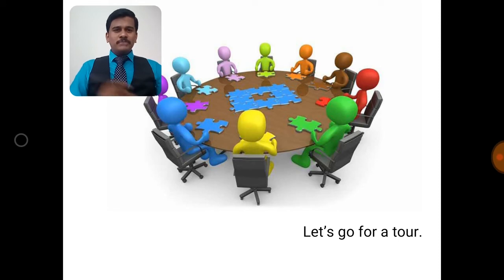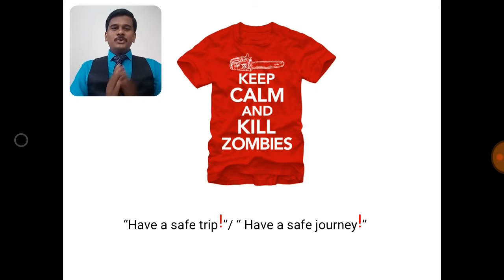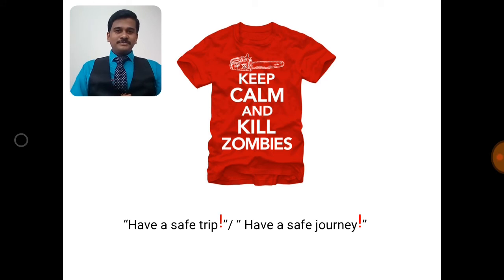In between the meeting, someone says: 'Let's go for a tour.' T-O-U-R is not 'tour' — it's 'tour.' We fixed this red t-shirt as our color code. So let's go for a tour. 'Keep calm and kill zombies.' We are ready to go for a tour. Have a safe trip. Have a safe journey.